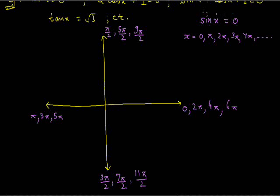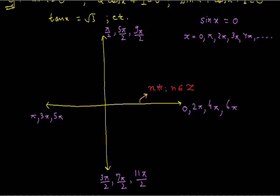Now how to express the solution of this trigonometric equation in just one line? Let's consider this horizontal line. We can observe that on this horizontal line, we get multiples of pi only, and they are integral multiples: 0 times pi, 1 times pi, 2 times pi, 3 times pi, 4 times pi, 5 times pi, 6 times pi, and so on. So we can name this line as n times pi, where n is an integer.